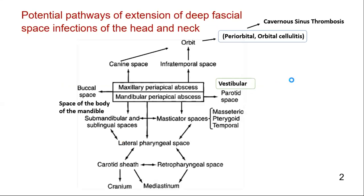This is a flowchart showing the potential pathways of extension of deep facial space infections of the head and neck. It shows the infections arising from the maxillary and mandibular teeth — from the maxillary teeth to the vestibular, buccal, canine, infratemporal, orbital space, and cavernous sinus.